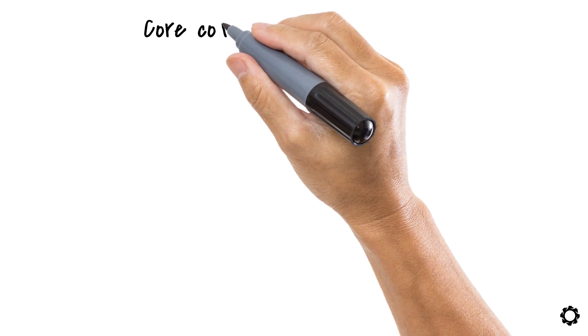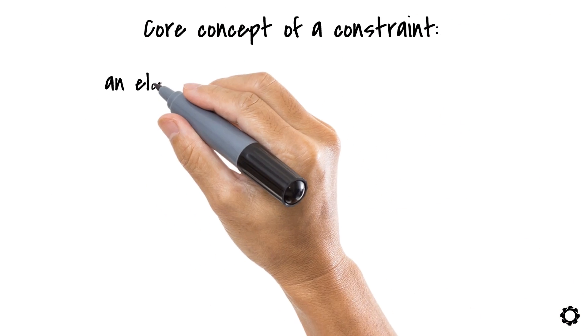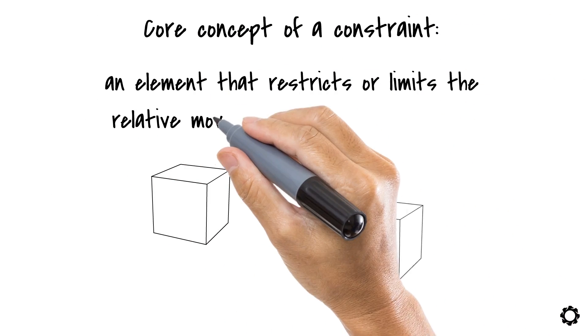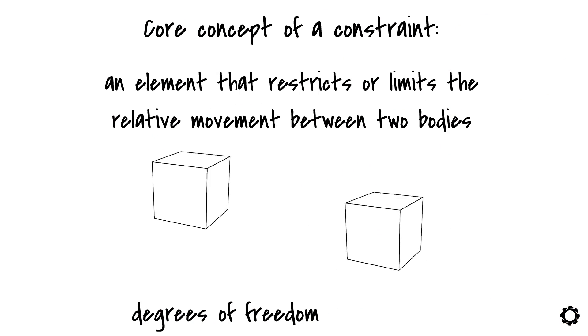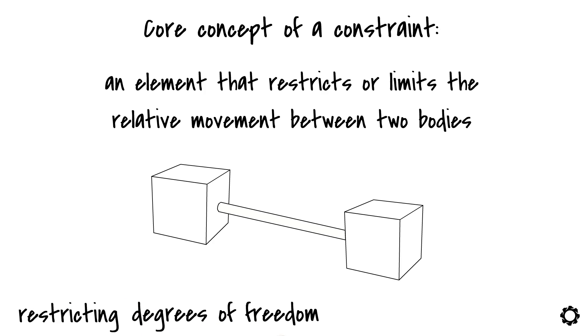If we start with the core concept of a constraint, which is an element that restricts or limits the relative movement between two bodies, I am already talking about degrees of freedom. Each body in space has six degrees of freedom when they are not attached to anything else. As soon as we join this body to another using a constraint, I start restricting degrees of freedom.